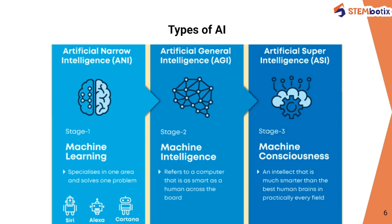The types of AI are differentiated into three parts. The first is Artificial Narrow Intelligence, or ANI, referred to as Stage 1 or machine learning. Examples include Siri, Alexa, and Cortana — the voice assistants found in iPhones and smart home devices. These are examples of Artificial Narrow Intelligence, also called weak AI.